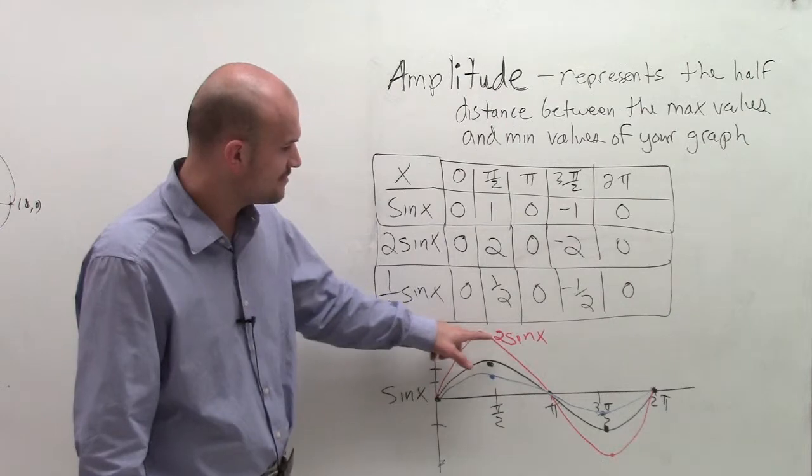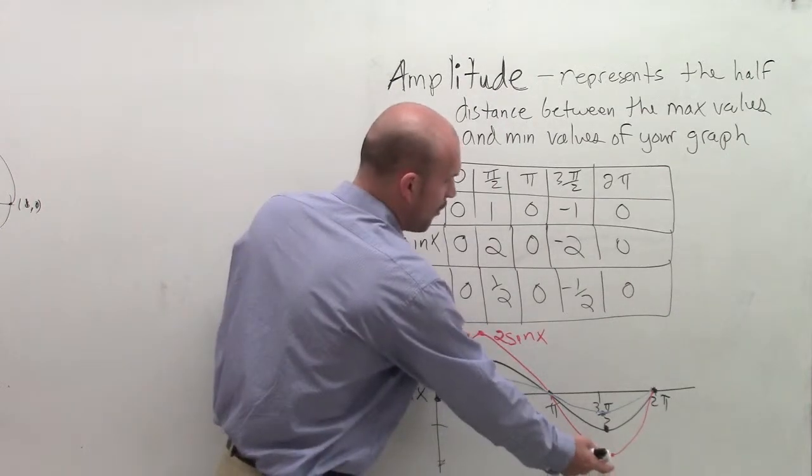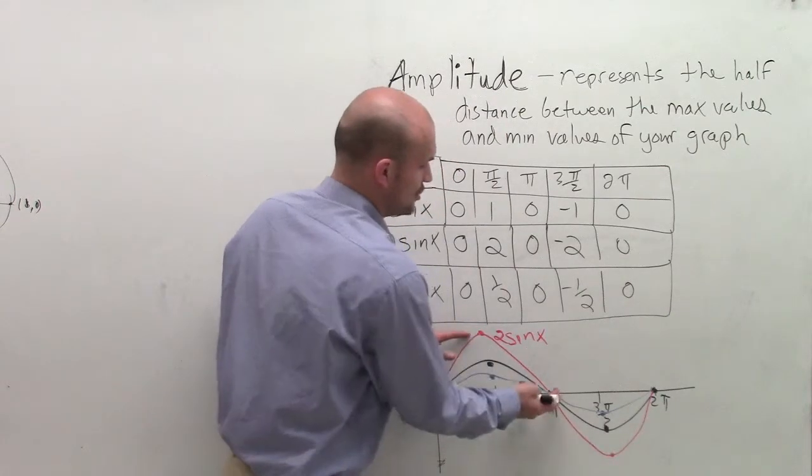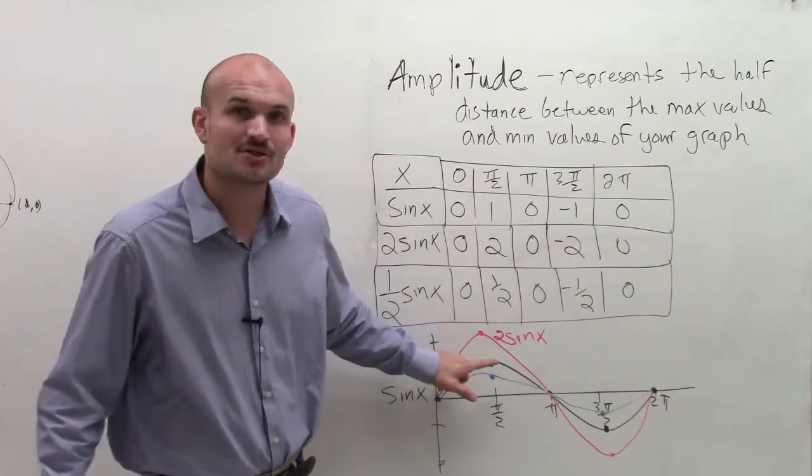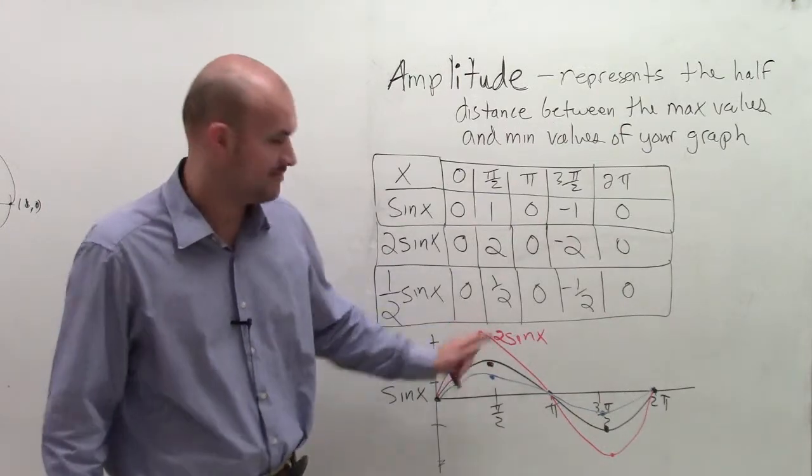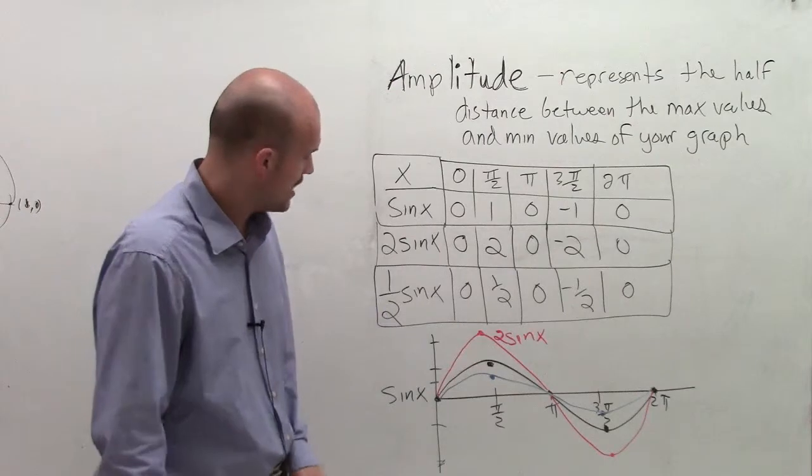Here, the distance between my max and my min is 4. So the half distance is 2. So you notice that the amplitude is what you're multiplying your function by, or the absolute value of what you're multiplying your function by.